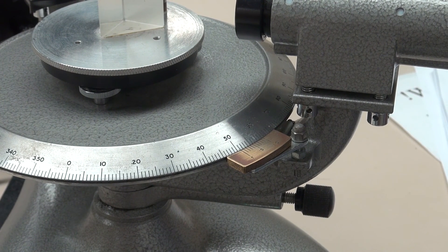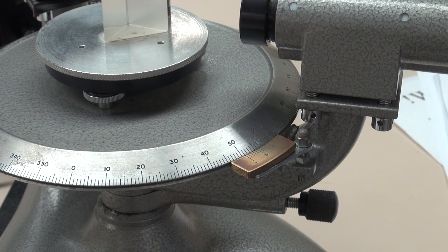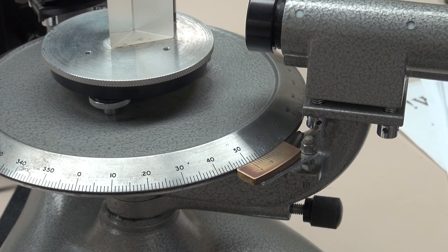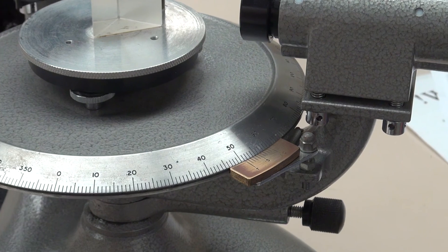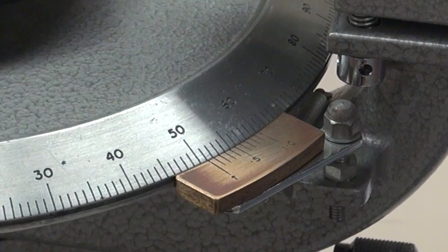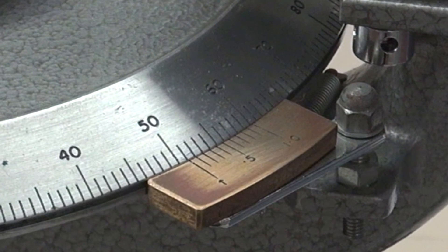The deviation angle is obtained by first noting the position on the spectrometer table scale of the arrow on the vernier scale. This gives the deviation angle to the nearest degree. Now decide which line on the vernier scale best aligns with the line on the spectrometer table scale. This vernier scale line gives the tenth of degree reading of the deviation angle.